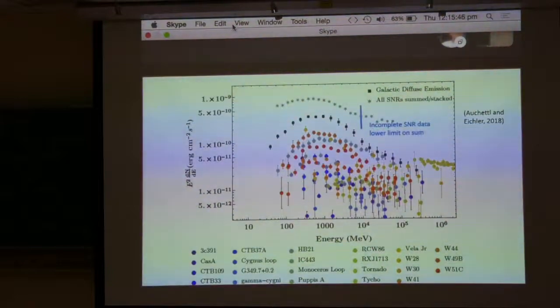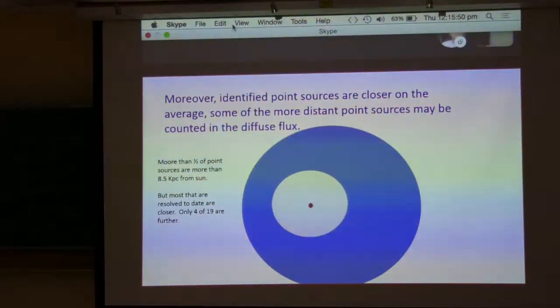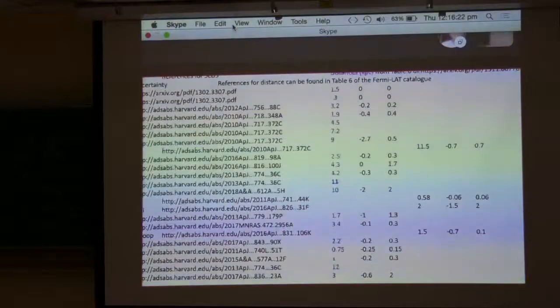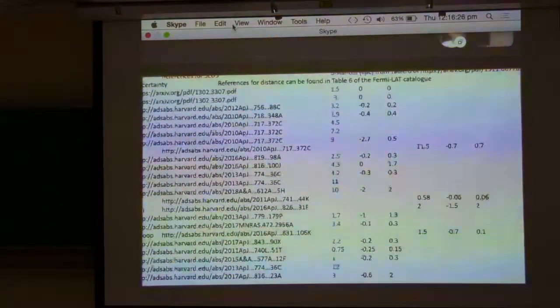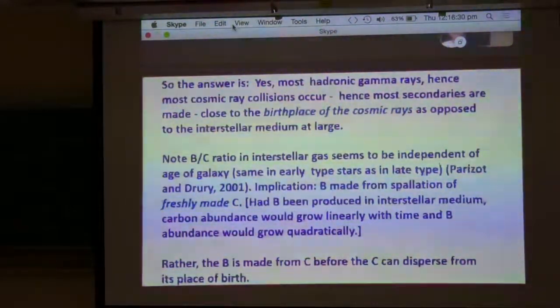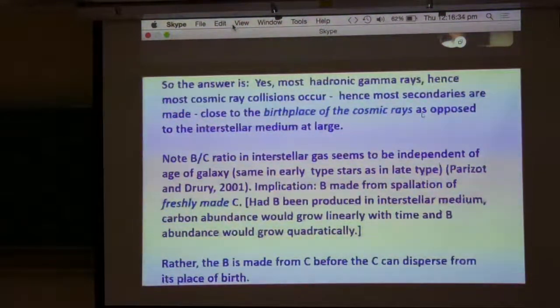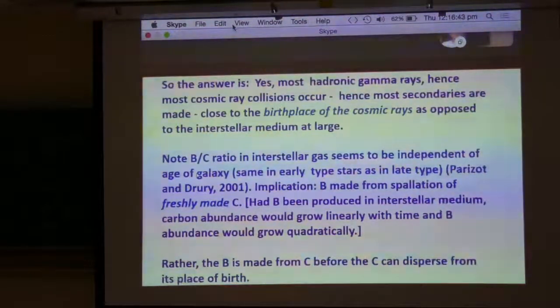Now, here I just show that more than half of the point sources are expected to be more than 8.5 kiloparsecs from the sun, which is the distance between the sun and the center of the galaxy. But here are the distances to the sources that we can resolve. Only four of 19 are more distant than 8.5 kiloparsecs. So we can assume that there are a lot more point sources on the other side of the galaxy that we are not yet resolving yet. So the answer is yes. Most of the gamma rays, and therefore most cosmic ray collisions, occur close to the birthplace of the cosmic rays, as opposed to the interstellar medium at large. And therefore, most secondaries are made also close to the birthplace of the cosmic rays.